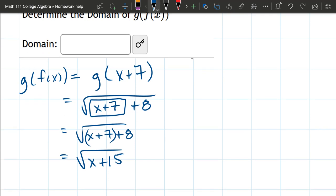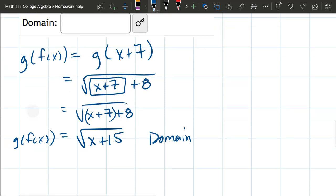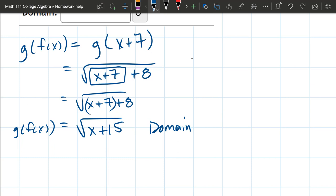So now this is g of f of x, and we're asked for the domain. So there's two rules to look out for. We don't divide by 0, that's not happening. Also, square root has to be 0 or more. So our domain, we have the inequality.